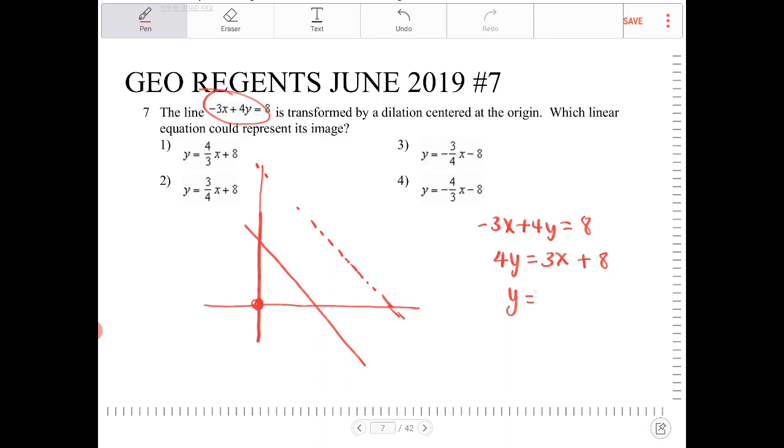I want to divide both sides by 4. I end up with 3x plus 8 over 4, which is the same thing as 3/4x plus 2.